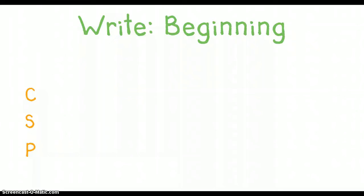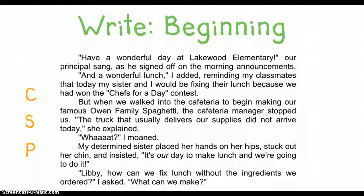So now I'm ready to write my beginning. And I want to make sure as I write that I've included the characters, the setting, and the problem. Have a wonderful day at Lakewood Elementary, our principal sang as he signed off on the morning announcements. And a wonderful lunch, I added, reminding my classmates that today my sister and I would be fixing their lunch because we had won the Chefs for a Day contest. But when we finally walked into the cafeteria to begin making our famous Owen family spaghetti, the cafeteria manager stopped us. The truck that usually delivers our supplies did not arrive today, she explained. What? I moaned. My determined sister placed her hands on her hips, stuck out her chin, and insisted, it's our day to make lunch and we're going to do it. Libby, how can we fix lunch without the ingredients we ordered? I asked. What can we make?